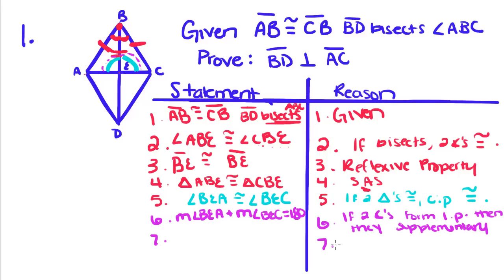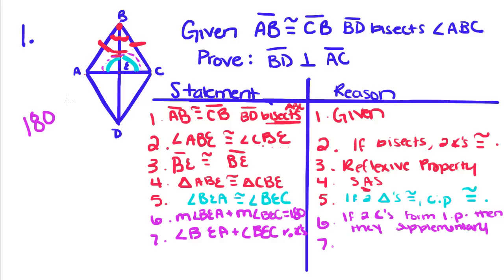Next — and this is a reason we haven't talked about yet — we can conclude that angle BEA and angle BEC are right angles. We can conclude this because if two angles are congruent and supplementary, then those angles must be right angles. If we solve it mathematically: since they're congruent and sum to 180, we divide 180 by 2 and get each equal to 90. So the reason is: if angles are congruent and supplementary, then they are right angles.